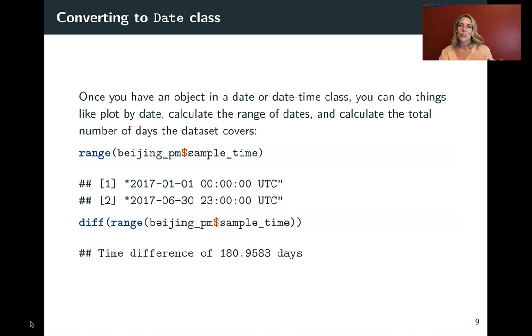Once you have something in a date or date time class, you can do some really interesting things with it. When it's just a character, you might recognize it as a date, but R won't recognize that numerical or quantitative aspect of it. But now that we've converted it into this special class, you can do things like you can get the range of dates that were available. If I use the range function, that will give you an output of two values with the minimum and maximum. I can do that with sample_time now and you get the earliest and latest observation. You can also take that range and use a diff function around it to take the difference. You can see that tells us our data set covers a little bit over half a year, a little bit over 180 days.